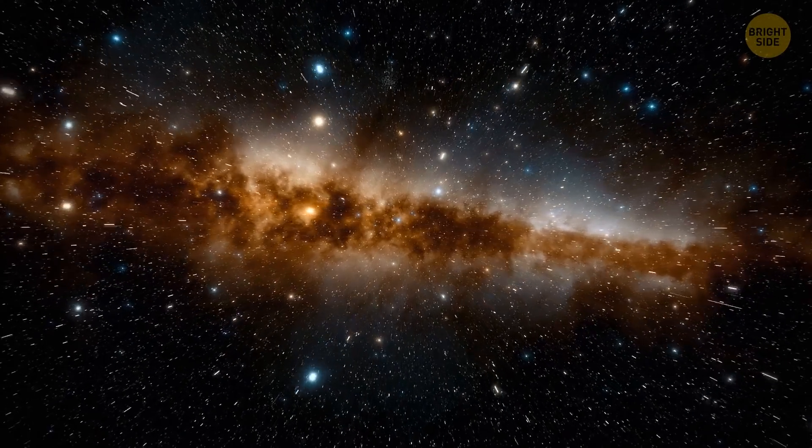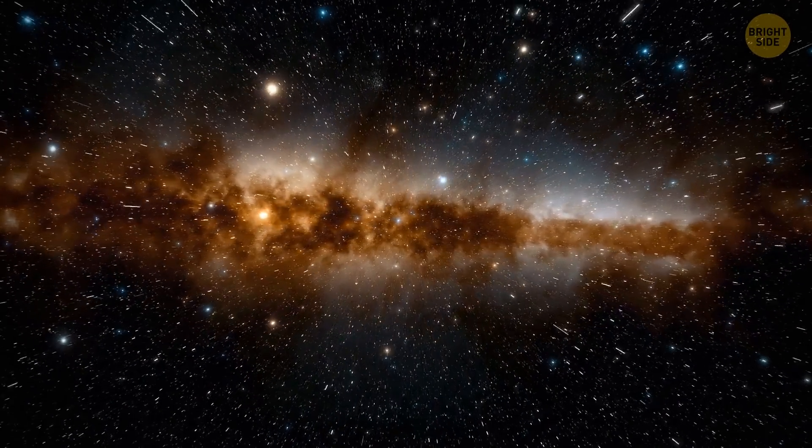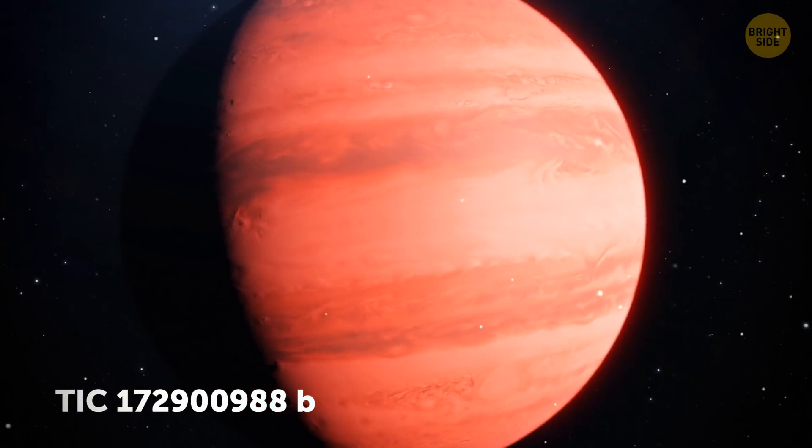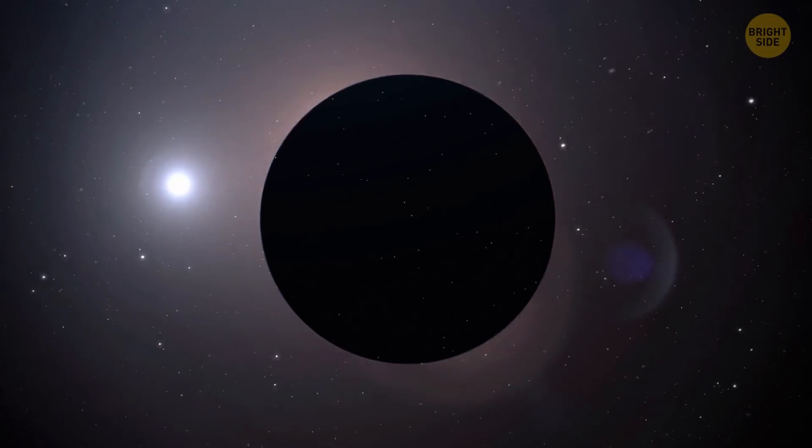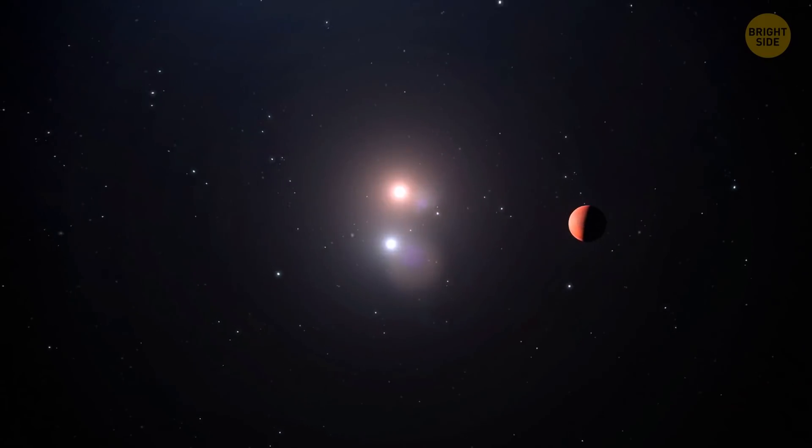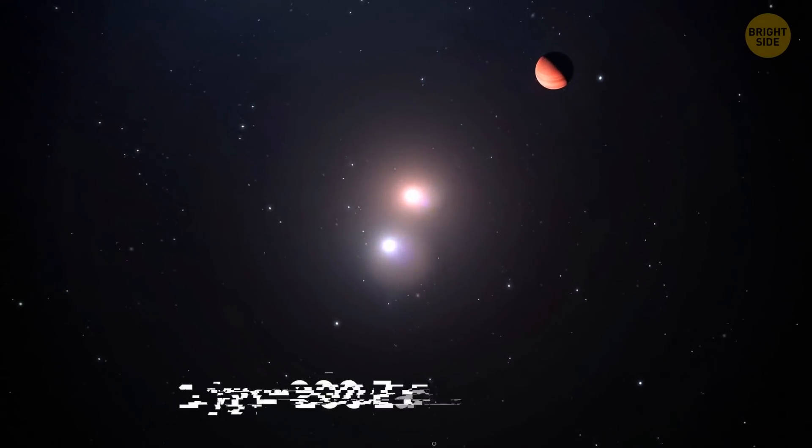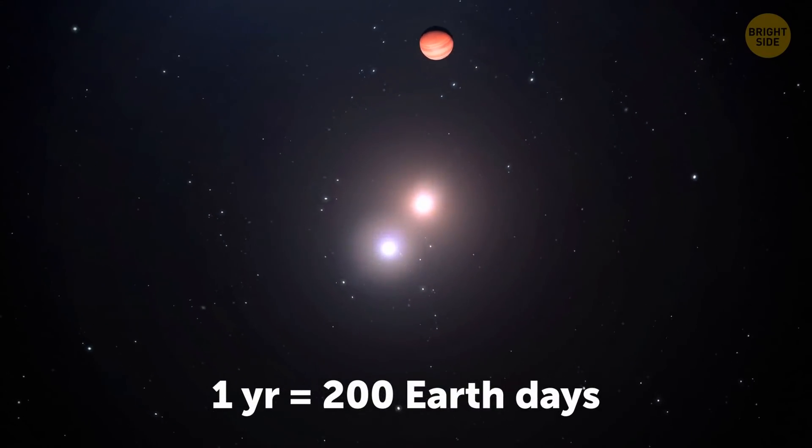There's a newly discovered planet outside our solar system. As large as Jupiter, it orbits two stars. And, as we can observe it from our planet, it crosses in front of them both. The full circle around these two stars, which means one year, takes approximately 200 Earth days.